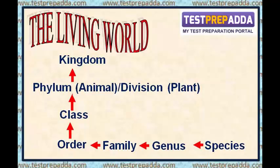Taxonomic categories are shown in a hierarchical arrangement in ascending order. Kingdom is at the highest level. Kingdom has many phyla and divisions. Each phylum and division has many classes. Each class has many orders. Each order has many families. Each family has many genera. Species is the lowest category and the basic unit of classification. Similarities are higher at the species level, but as we go up the hierarchy, similarities decrease.